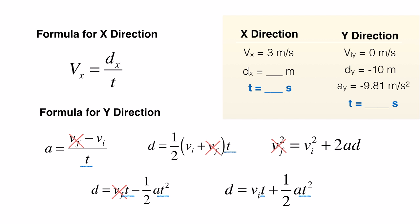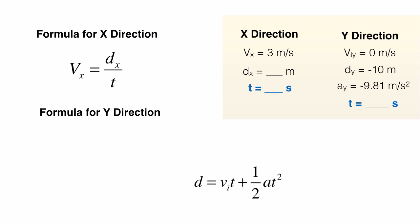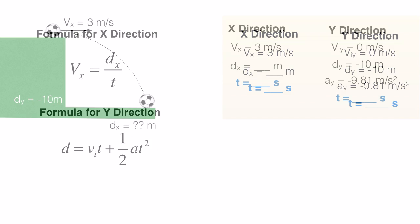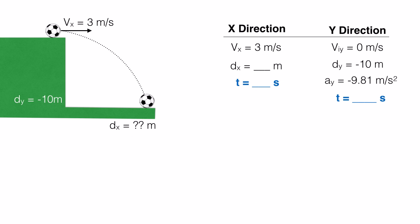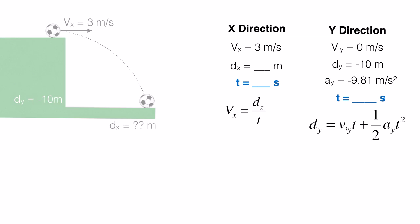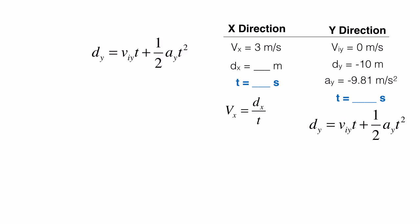That leaves us with one formula left. The distance is our initial velocity times time plus one half acceleration times time squared. Now we have all the information that we need to get going with this problem. We add our formulas into the information that we know. And since we have everything in the y direction to solve for time, we'll solve for that first.